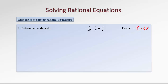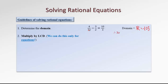Therefore, the domain for this equation is all real numbers except for 0. We need to subtract the set containing the element 0 from the set of all real numbers. As soon as we have our domain determined, the next step would be to clear the fractions — get rid of our denominators. We can do this by multiplying both sides of the equation by the lowest common denominator.